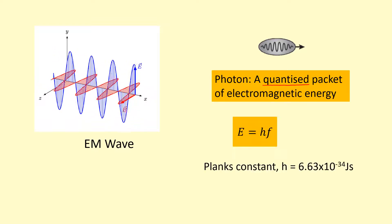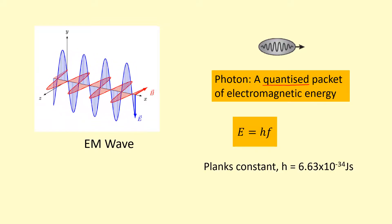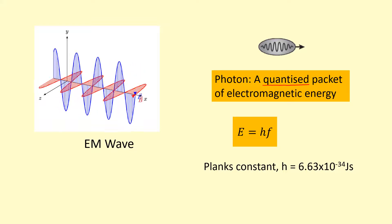The energy of a photon can be determined using this equation. E here stands for energy, measured in joules. H is Planck's constant.